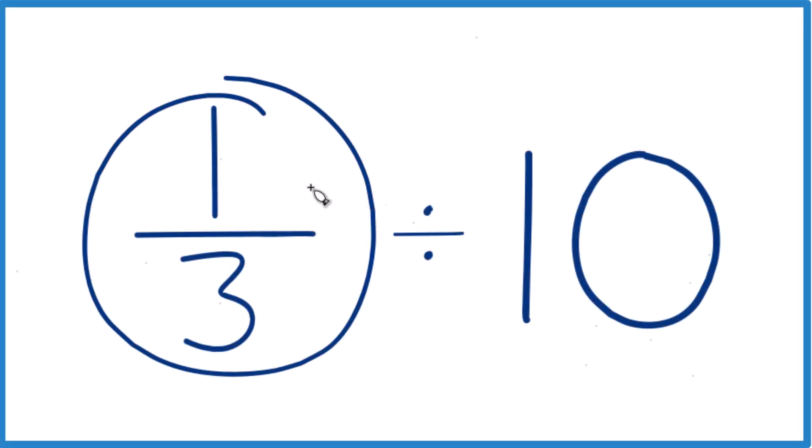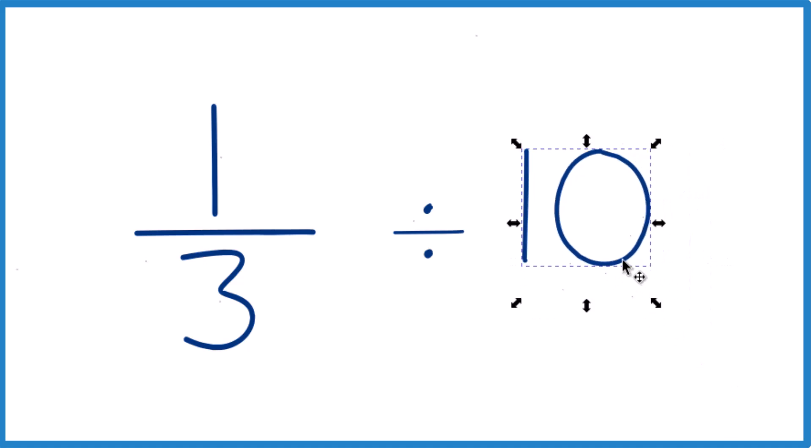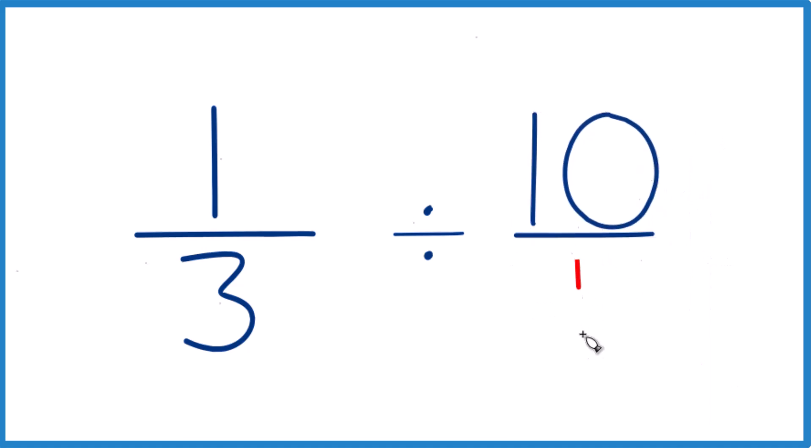Here's how you figure out 1/3 divided by 10. First thing I'm going to do is take this 10 here and consider it to be 10 over 1. Because 10 divided by 1 is still 10, but now things line up kind of nice.